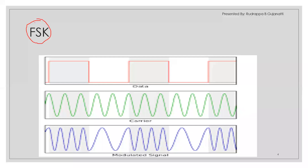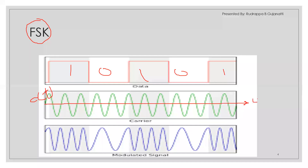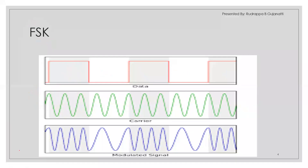Next is FSK — frequency shift keying. Consider the data sequence one, zero, one, zero, with a carrier signal of fixed frequency. As the name tells us, based on the data there should be some change in the frequency of the carrier signal. If the data is one, the carrier frequency is retained; if it is zero, the carrier frequency is reduced — a lower frequency is presented.